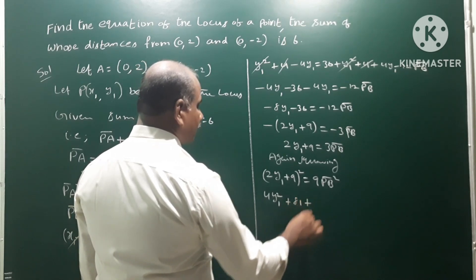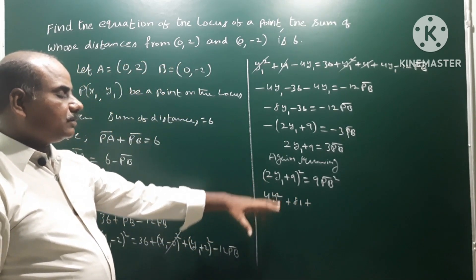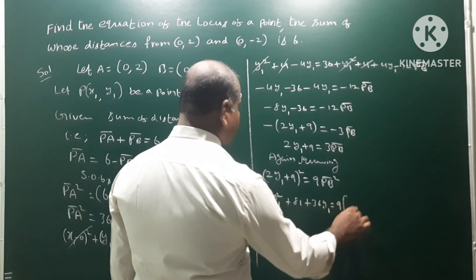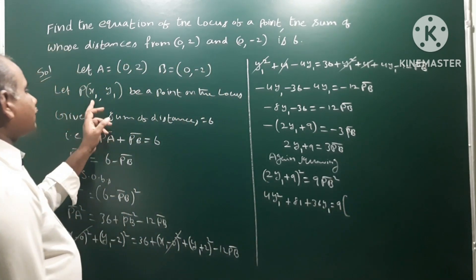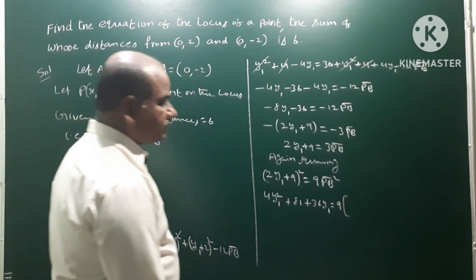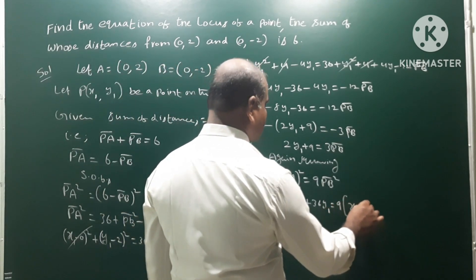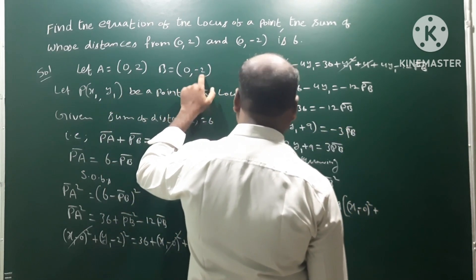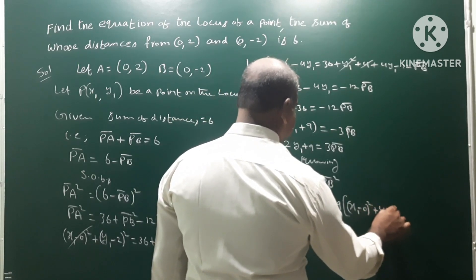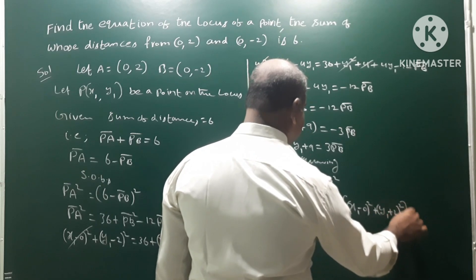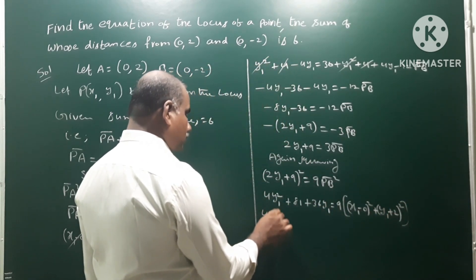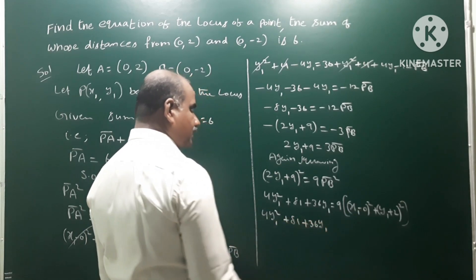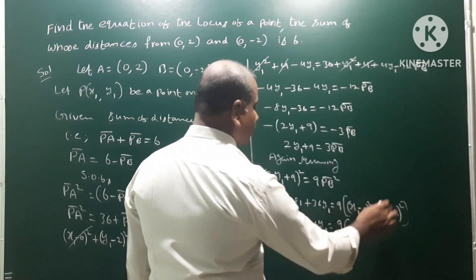Dividing through by the common factor, we get 2y1 plus 9 equals 3PB. To eliminate the root, square both sides again: (2y1 plus 9) squared equals 9 times PB squared. Expanding the left side: 4y1 squared plus 81 plus 36y1. And 9 times PB squared equals 9 times [(x1 minus 0) squared plus (y1 plus 2) squared].